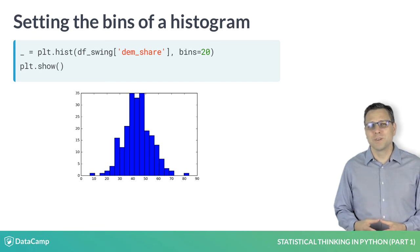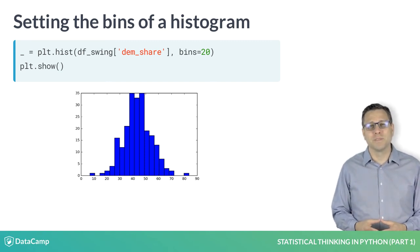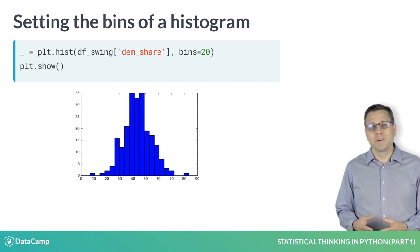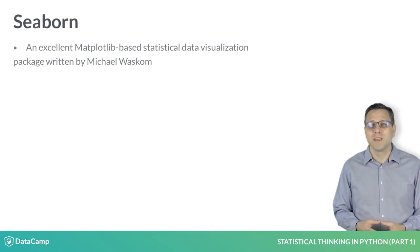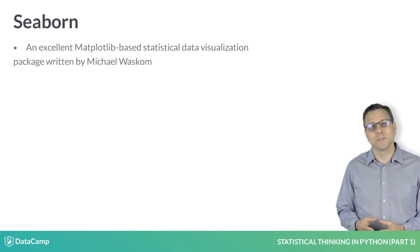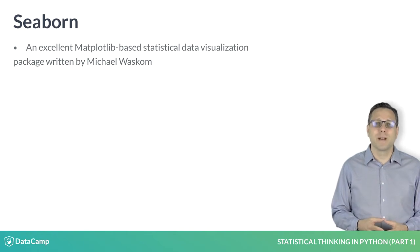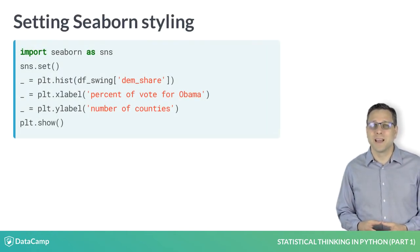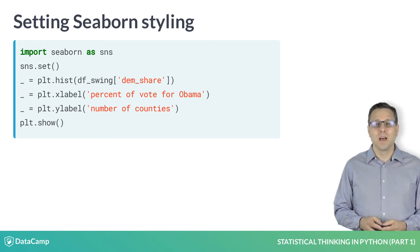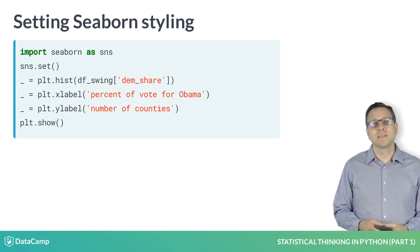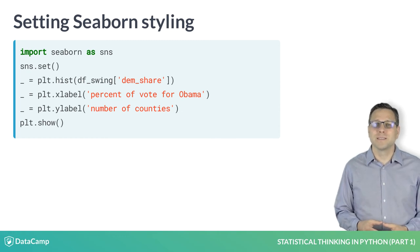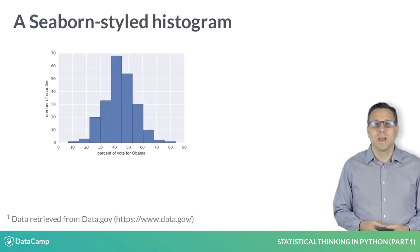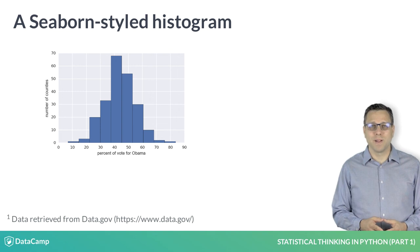The plots we've made so far are stylized with Matplotlib's default settings. I prefer to use the default settings of Seaborn, an excellent Matplotlib-based statistical data visualization package written primarily by Michael Waskom. We import it as sns, as is traditionally done, and we can set the style to Seaborn's default using the sns.set function, resulting in nicely formatted plots.